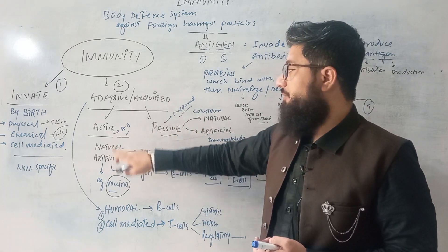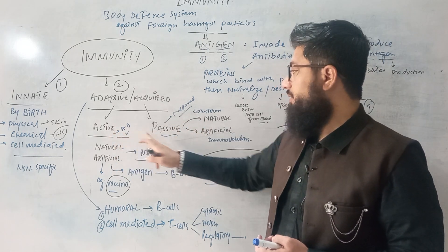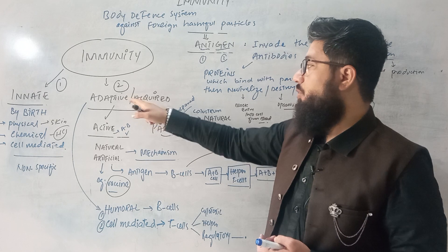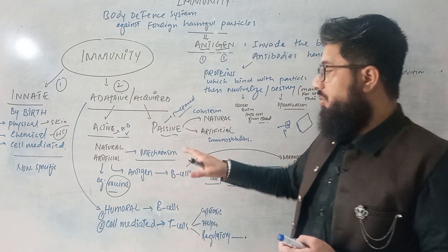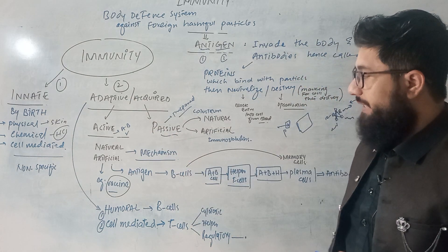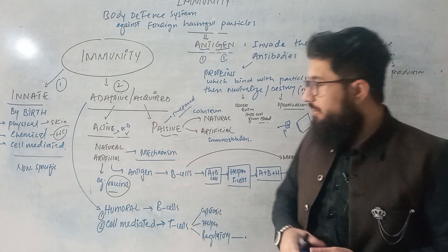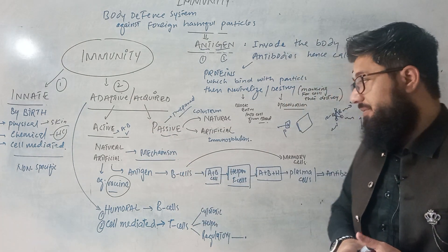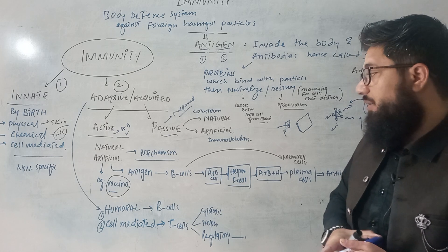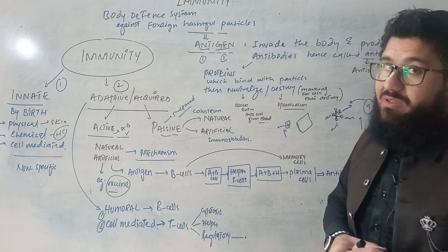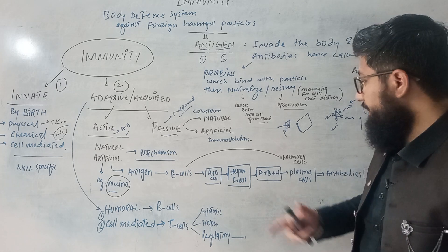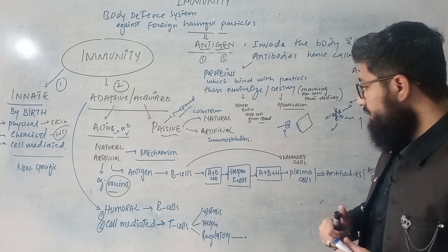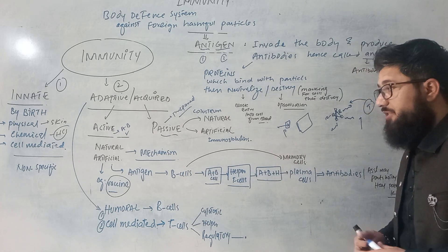Artificial passive immunity is when we give a patient — whether a baby, young person, or elderly — already prepared antibodies, especially when the patient is very weak and their body cannot make antibodies. We give those prepared antibodies to fight against certain diseases. So naturally we get passive immunity from our mothers, and artificially we give prepared antibodies.